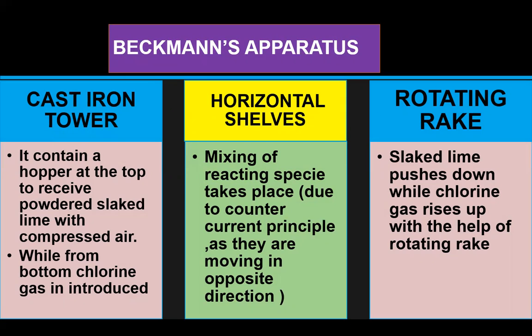Slaked lime in powdered form is inserted from the top while chlorine gas is injected from the bottom. These raw materials move on horizontal shelves; mixing of reacting species takes place due to the counter-current principle, as they move in opposite directions. Slaked lime is solid and moves downward, while chlorine gas is in gaseous state and rises upward. At the point of their meeting, both reacting species react with each other.